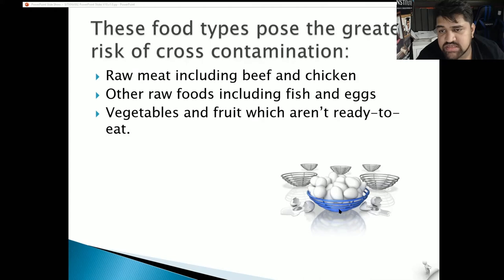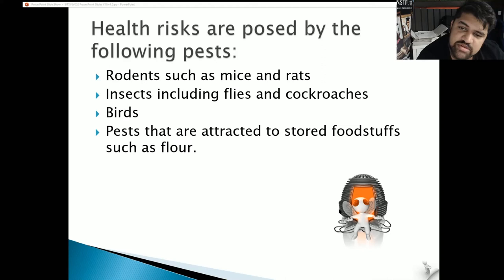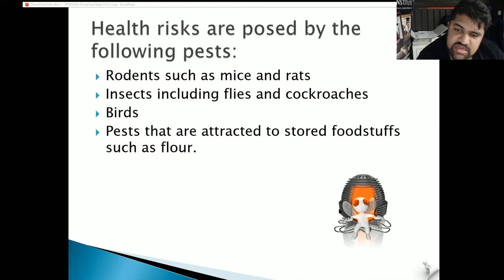Food types posing a greater risk of cross-contamination include raw meat (beef and chicken), and other raw foods such as fish, eggs, vegetables, and fruit that aren't ready to eat. Health risks are also posed by pests: rodents such as mice and rats, insects including flies and cockroaches, birds, and pests attracted to stored foodstuffs such as flour (e.g., ants, mites, and other small insects).